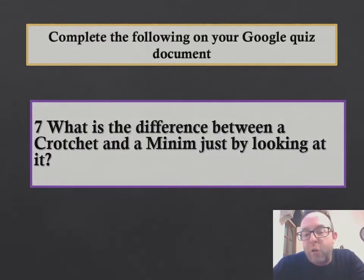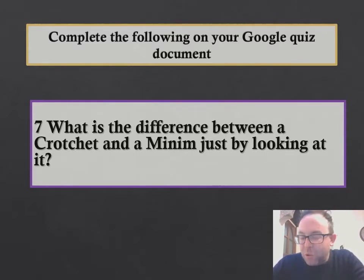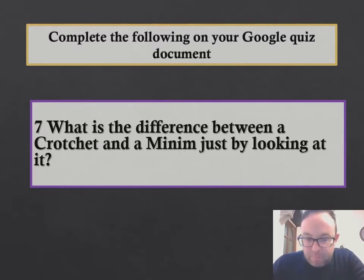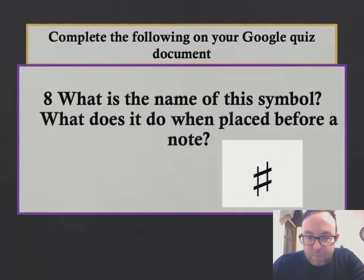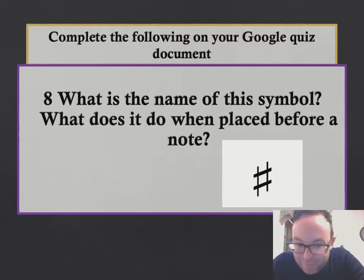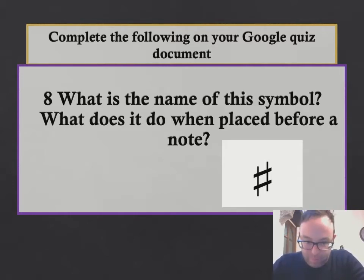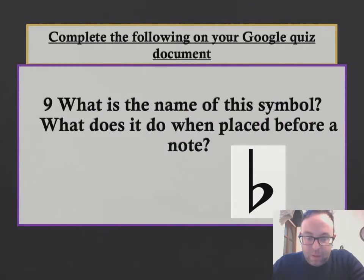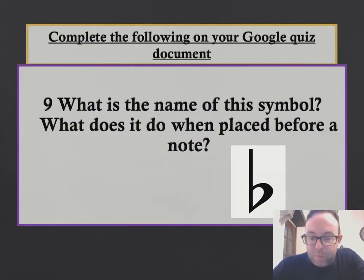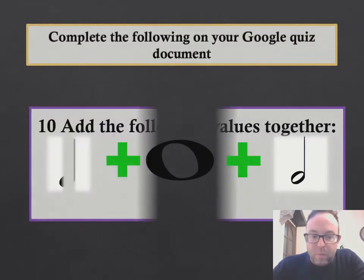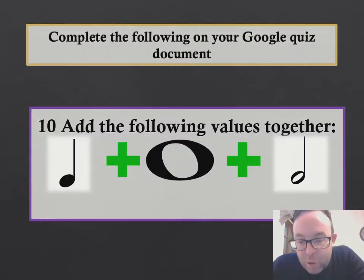What is the difference between a crotchet and a minim just by looking at it? I'll give you a little clue — you've got to think about the shape and colour. What is the name of this symbol? Remember it's not hashtag — what does it do when it's placed before a note? What is the name of this symbol and what does it do when placed before a note? And finally, add the following note values together.